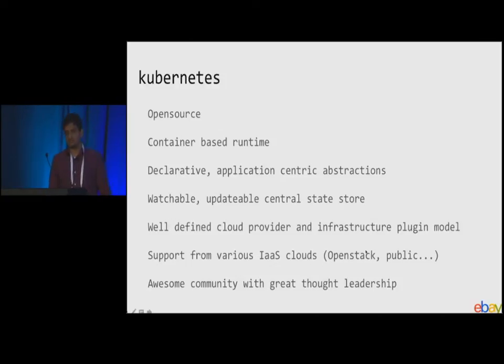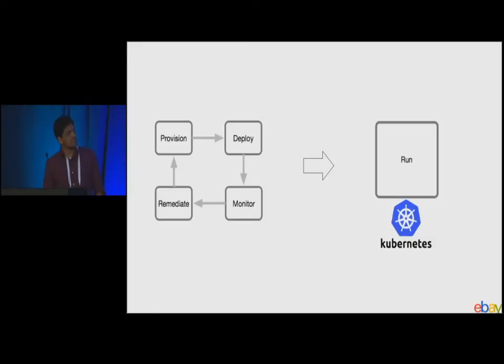And the cloud provider and infrastructure plug-in model is very well defined. In the last six months, we were able to do quite a lot of changes to suit our needs. There's a lot of support from OpenStack. We are basically an OpenStack shop. We have a lot of investment there. OpenStack has a project called Magnum which deals with Kubernetes, so there's a good alignment there. And the community is awesome and great thought leadership from people like Brian, Tim, and others. The crux of the thing is, from the current model where the application platforms and framework services have to deal with IaaS, we want to simplify that to a simple run model where we declare our intent and Kubernetes takes care of the whole thing for us.